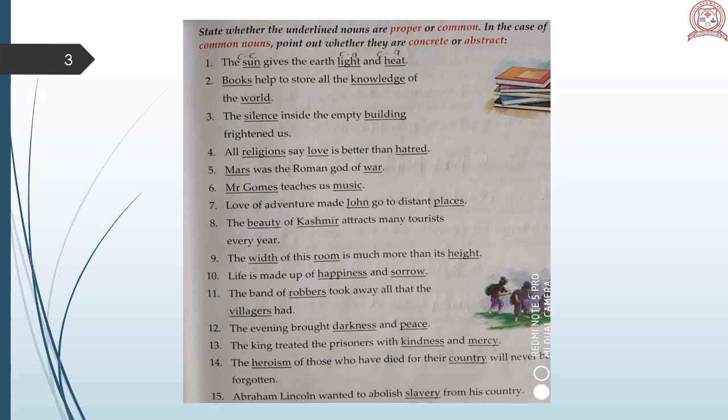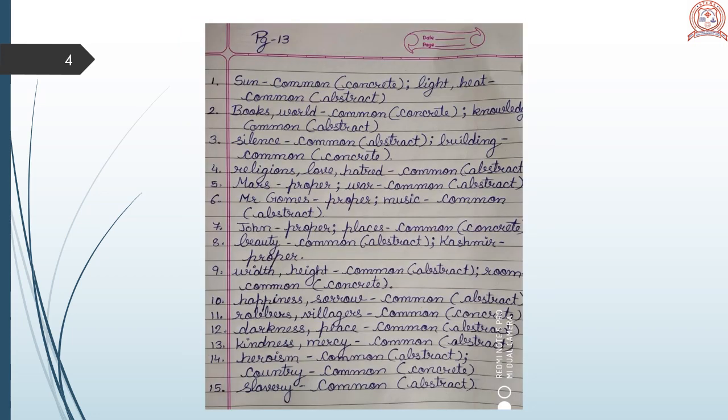The king treated the prisoner with kindness and mercy. Kindness and mercy both are common, abstract. The heroism of those who have died for their country will never be forgotten. Heroism, common, abstract. Abraham Lincoln wanted to abolish slavery from his country. Slavery, common, abstract. Students, you have to write this in your English grammar notebook.